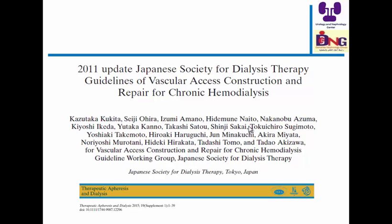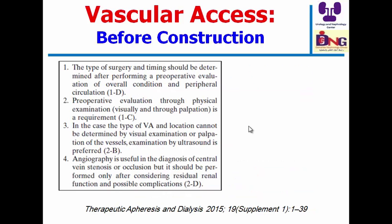Regarding guidelines for vascular access, an important publication is the 2015 online update of the 2011 Japanese Society for Dialysis Therapy guidelines for vascular access construction and repair for chronic hemodialysis. I advise everyone to read these guidelines covering advice before construction, during, and after. Before construction, the type and timing of surgery should be determined after preoperative evaluation of overall condition and peripheral circulation. Visual examination and palpation are required. If vessel type and location cannot be determined, ultrasound is preferred. Angiography is useful for central vein stenosis but should consider residual renal function.